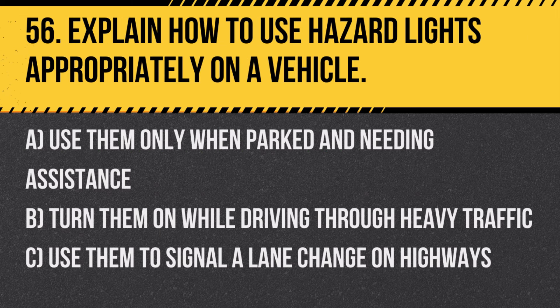Question 56: Explain how to use hazard lights appropriately on a vehicle. A. Use them only when parked and needing assistance. B. Turn them on while driving through heavy traffic. C. Use them to signal a lane change on highways. Answer: A. Use them only when parked and needing assistance. Hazard lights should be used to indicate a stopped or disabled vehicle to alert other drivers.